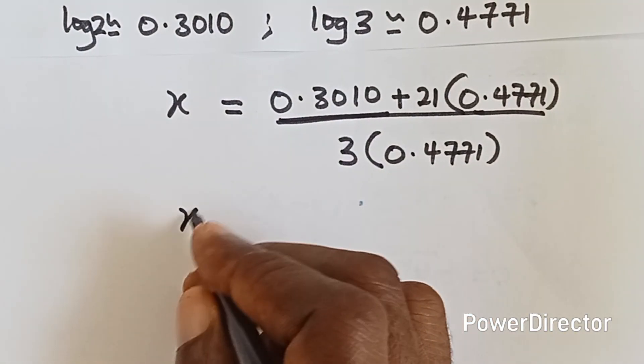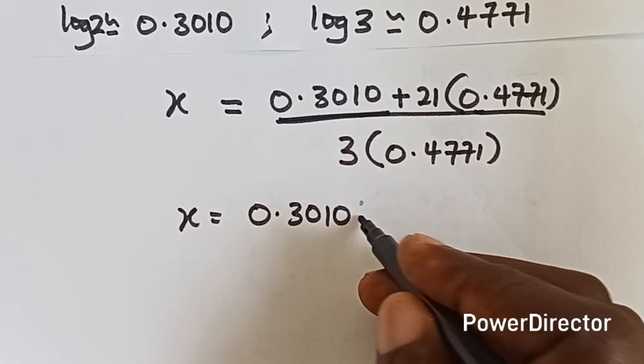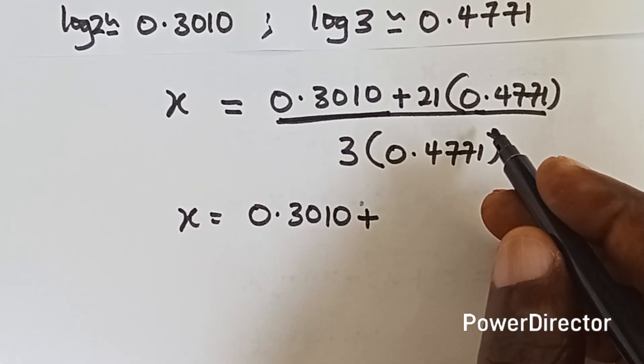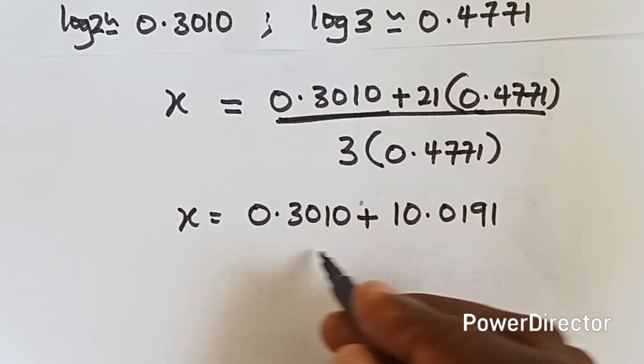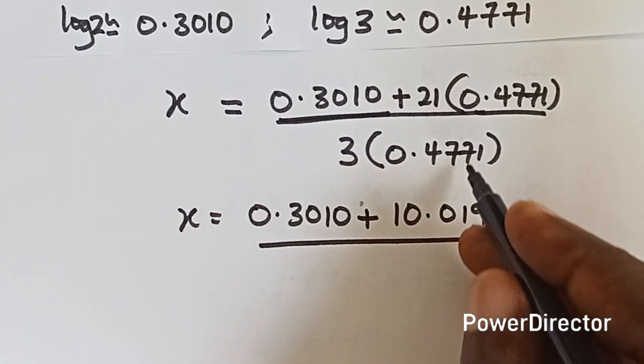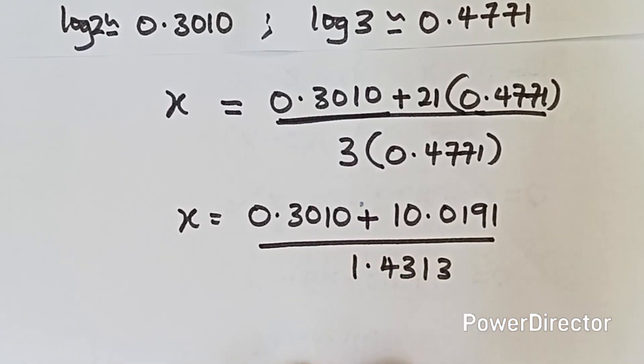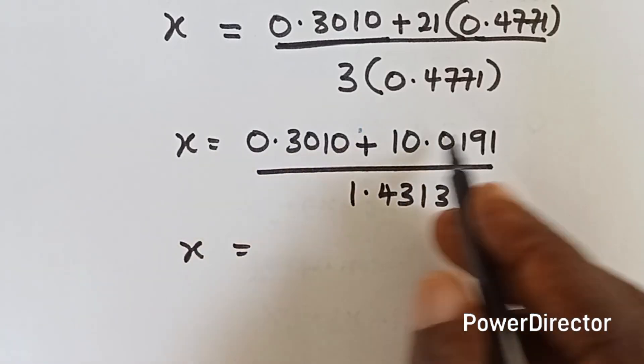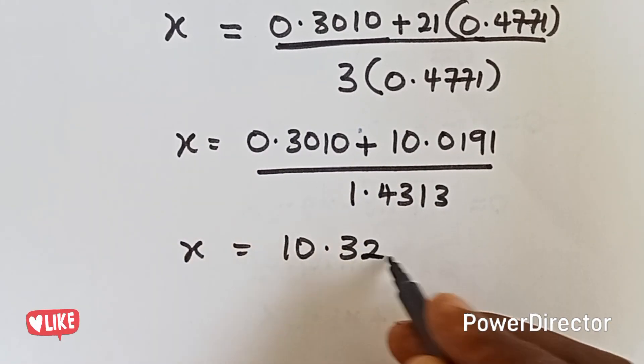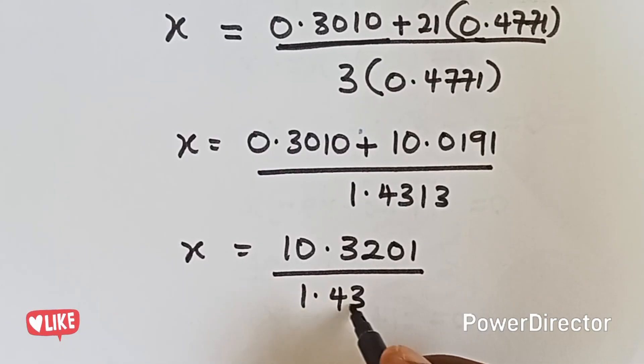Okay, so we have 0.3010. 21 times that will give us 10.0191 over, if you multiply this, we have 1.4313. Now let's add our numerator. This plus this will give us 10.3201 over 1.4313.